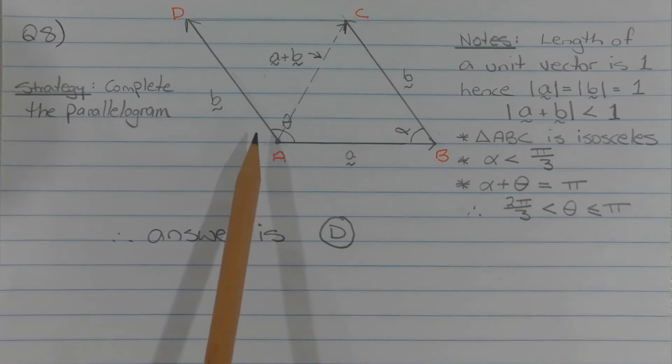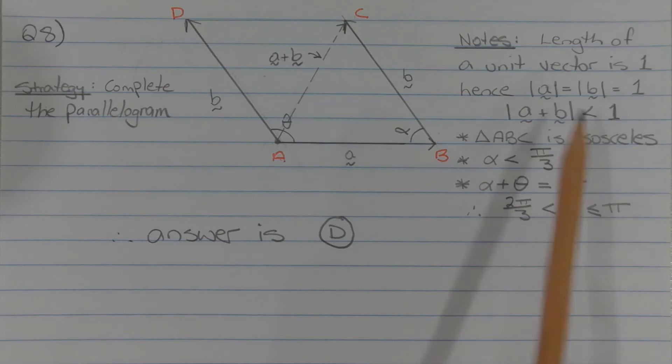Now in the parallelogram, this angle theta, which is the angle between the two vectors, and this angle alpha, are supplementary. So alpha plus theta is equal to pi. And because alpha is less than pi over 3, that means that theta must be greater than 2 pi over 3 and less than or equal to pi.